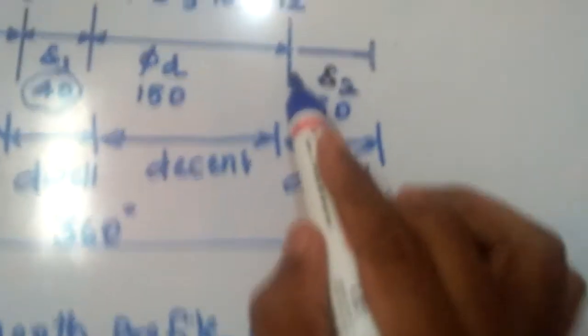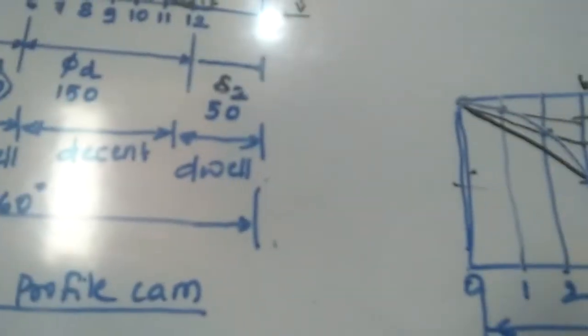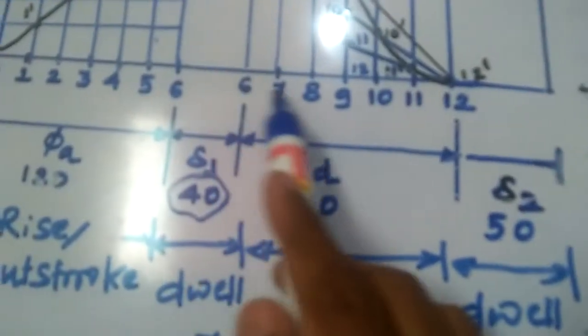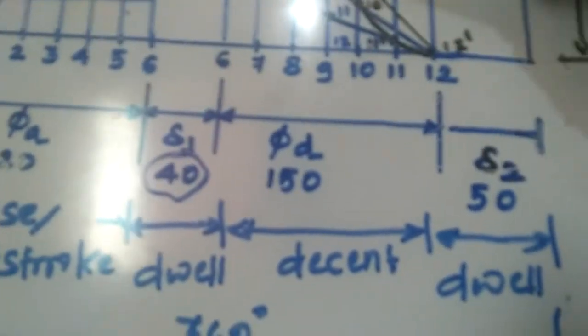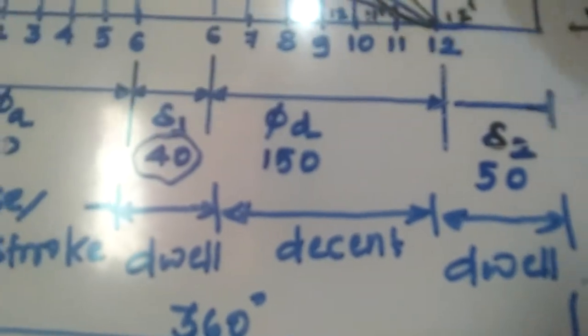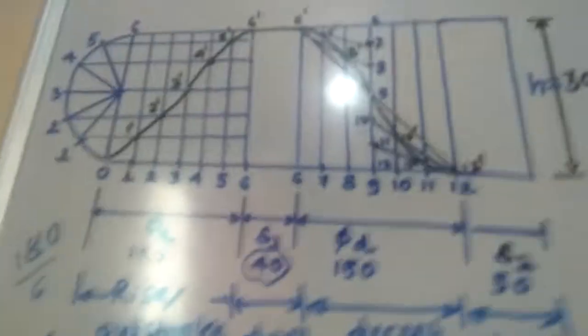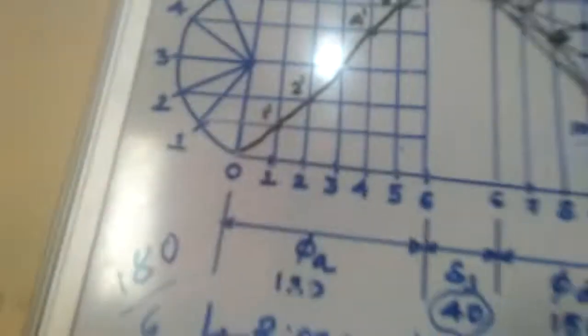The next section is followed by the second dwell period. Remaining is 360 minus all other periods, which gives 50 degrees — that is the second dwell period. For the cam profile, you need the vertical heights from the displacement diagram: specifically the heights 1 to 1-dash, 2 to 2-dash, 3 to 3-dash, 4 to 4-dash, 5 to 5-dash, 6 to 6-dash — and for the return, 6 to 6-dash, 7 to 7-dash, and so on. These vertical heights are what you need for the cam profile.